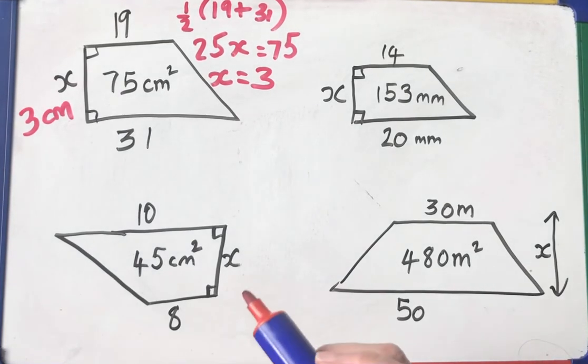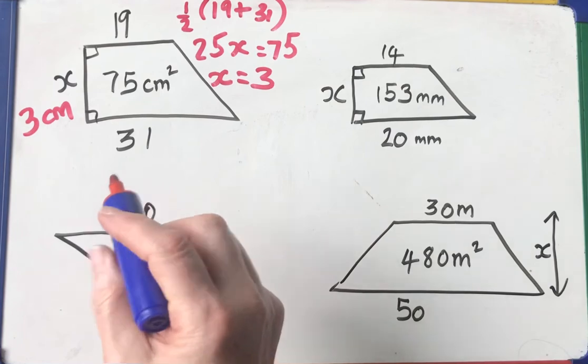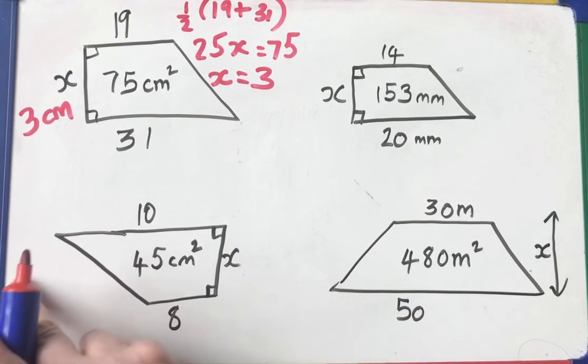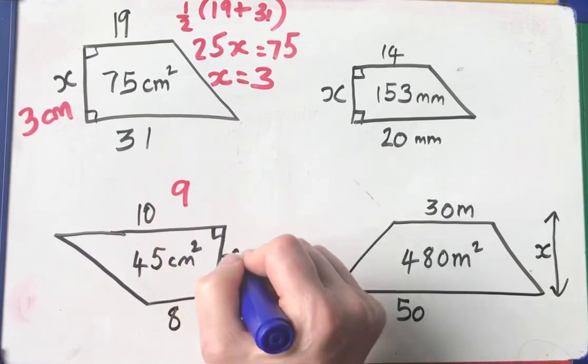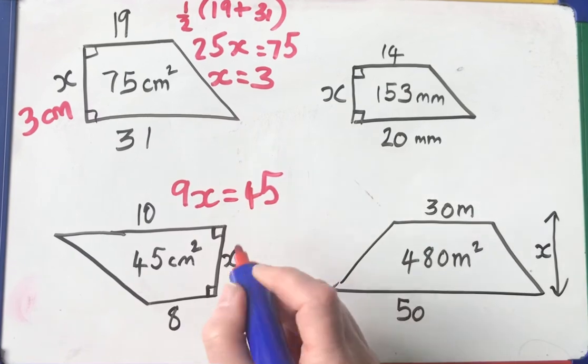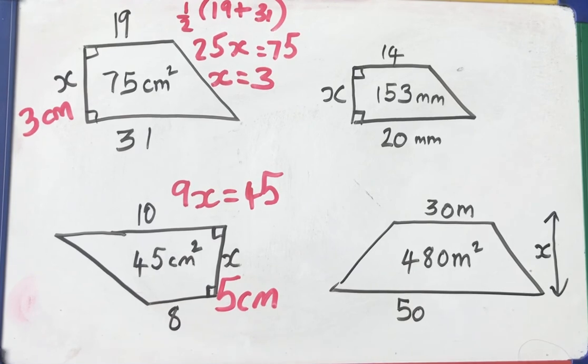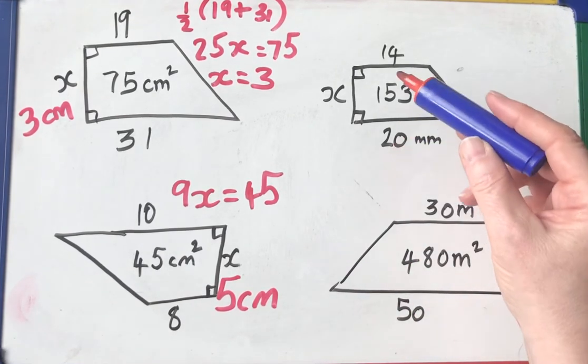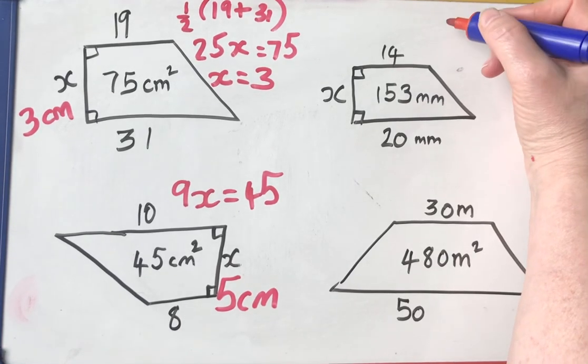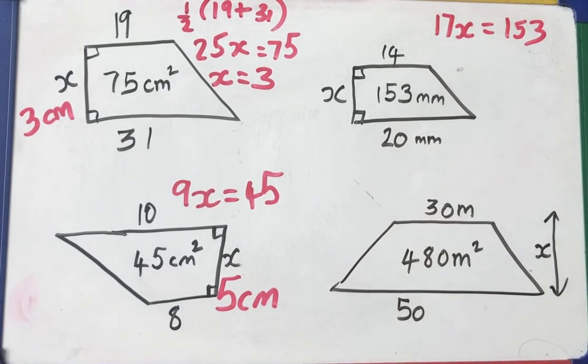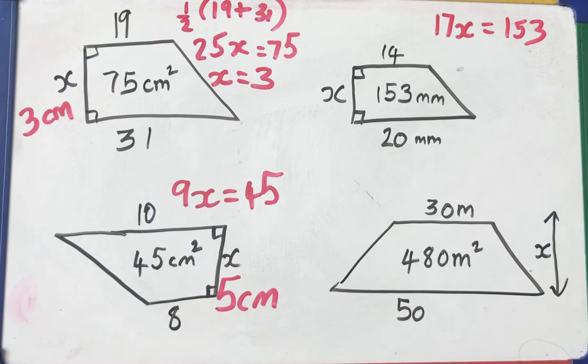Let's look at this one. 20 plus 14 is 34. Half of that is 17. So 17 times the height will give me 153. Well, 153 divided by 17 is actually 9 centimeters. I hope you got that right.